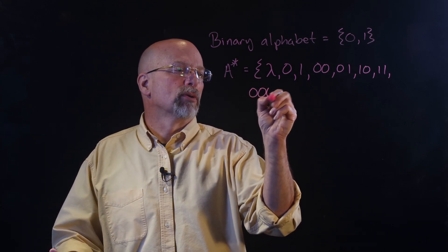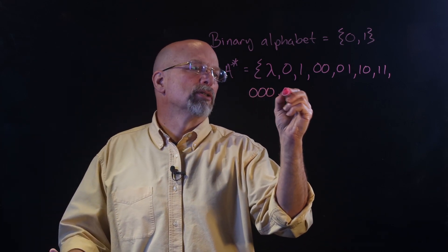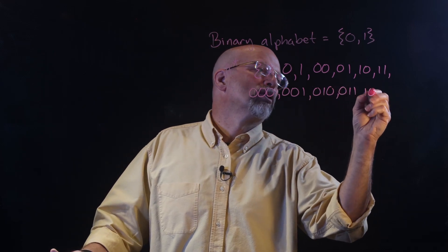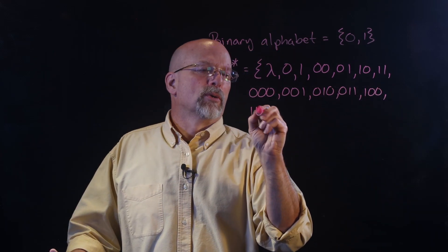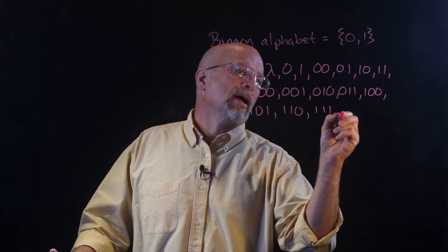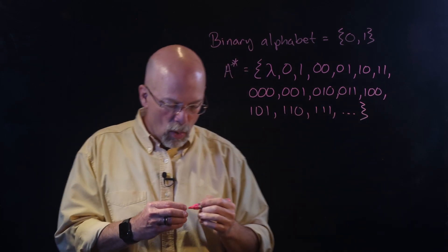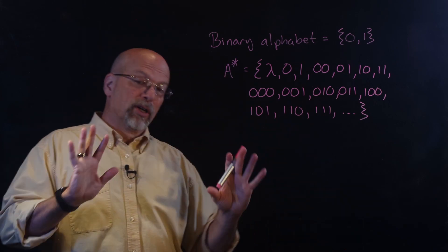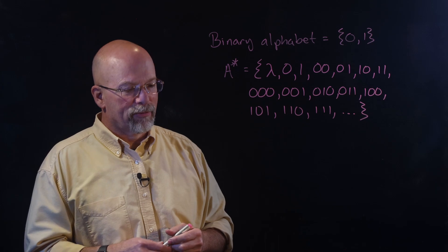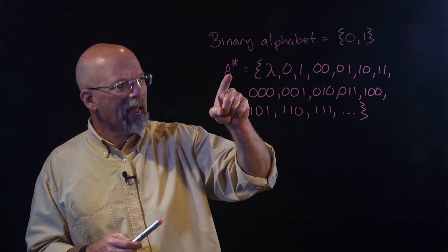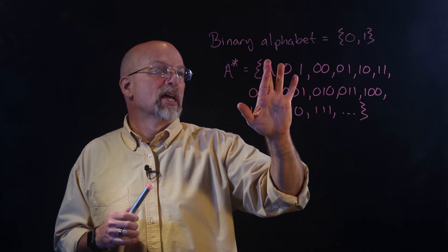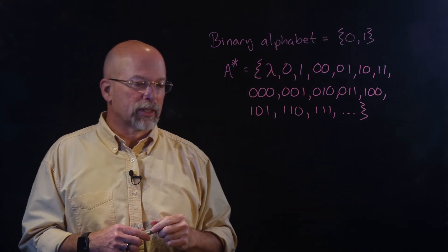For length 3: 000, 001, 010, 011, 100, 101, 110, 111. And we can continue on. What you're looking at is that strings in A-star must be of finite length. A with the dagger — the plus — just doesn't include the empty string.